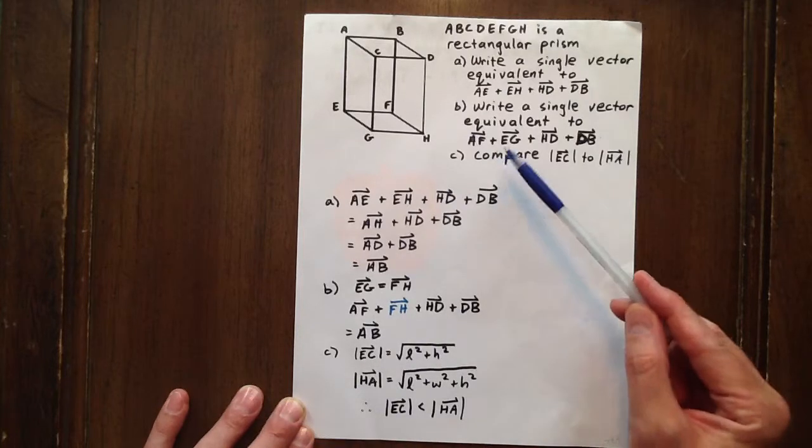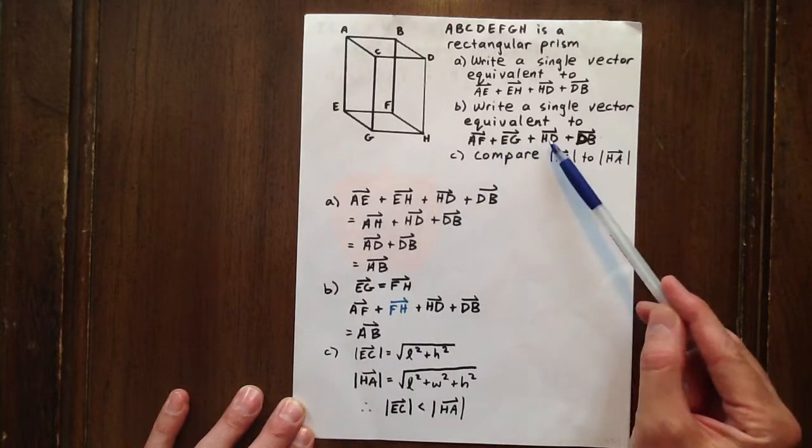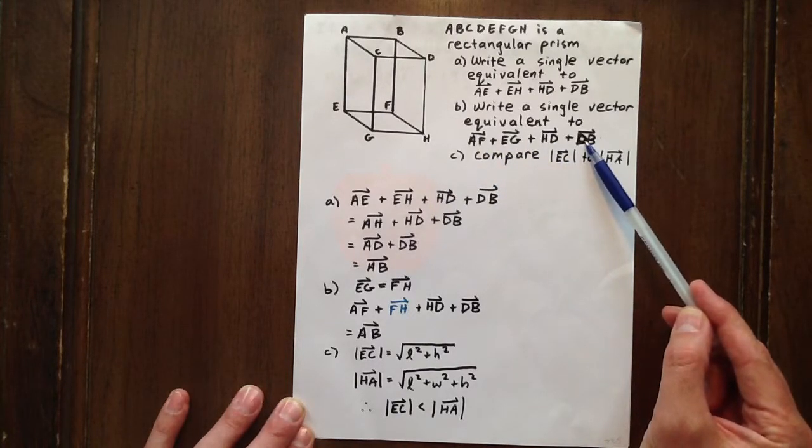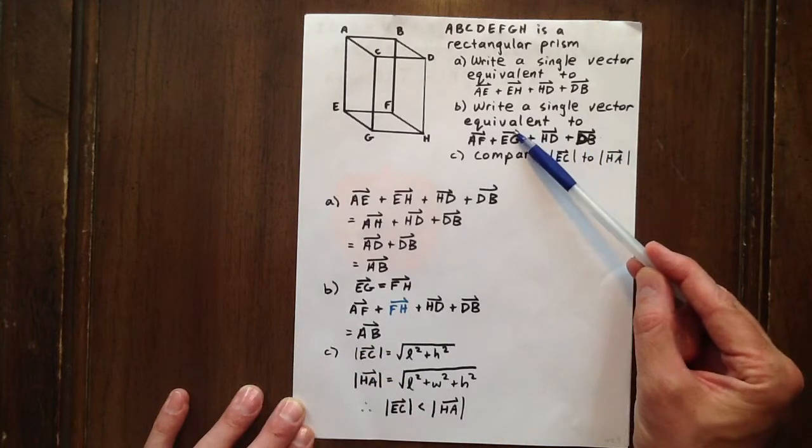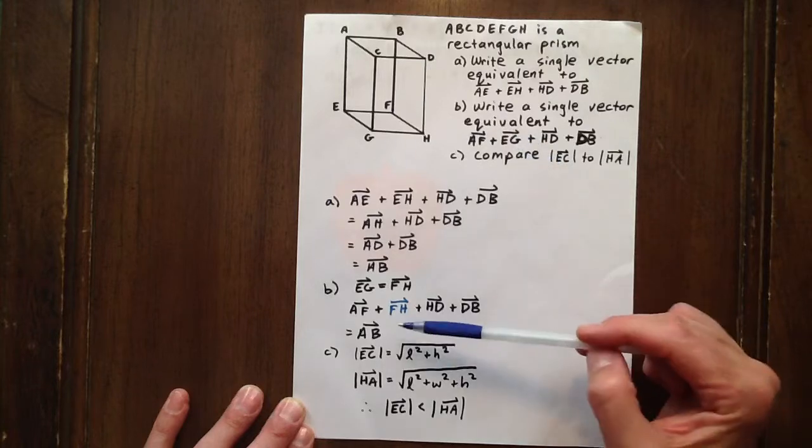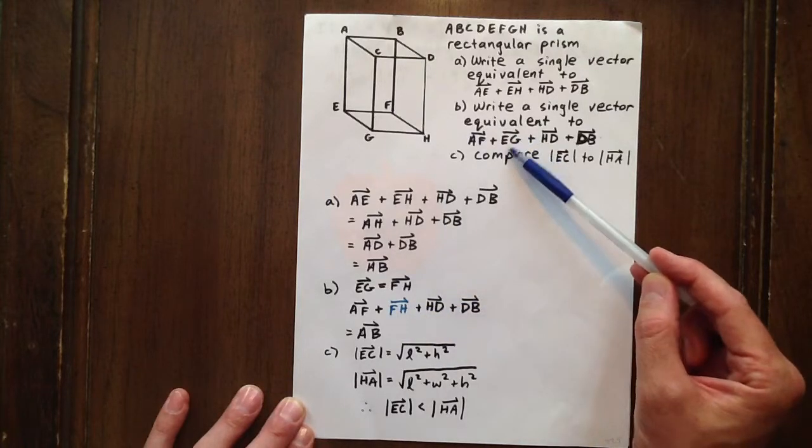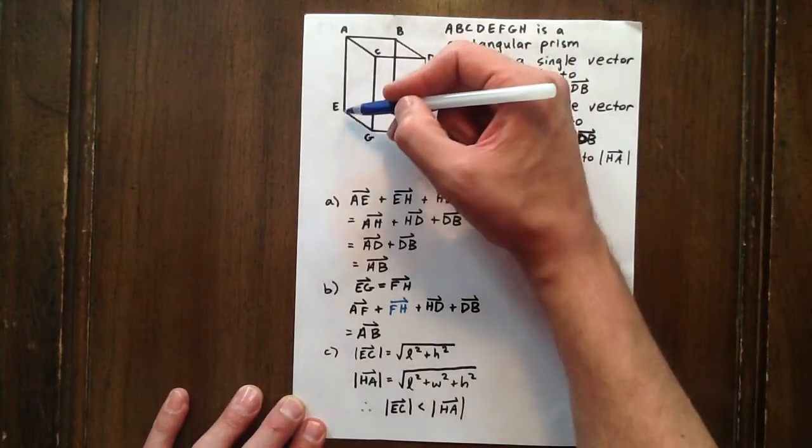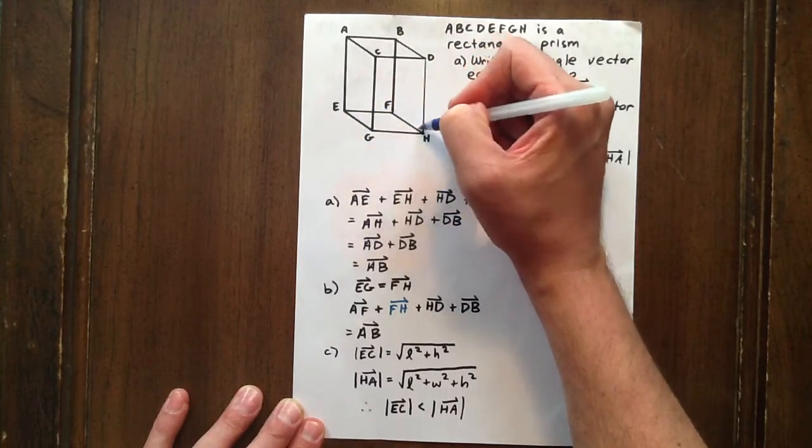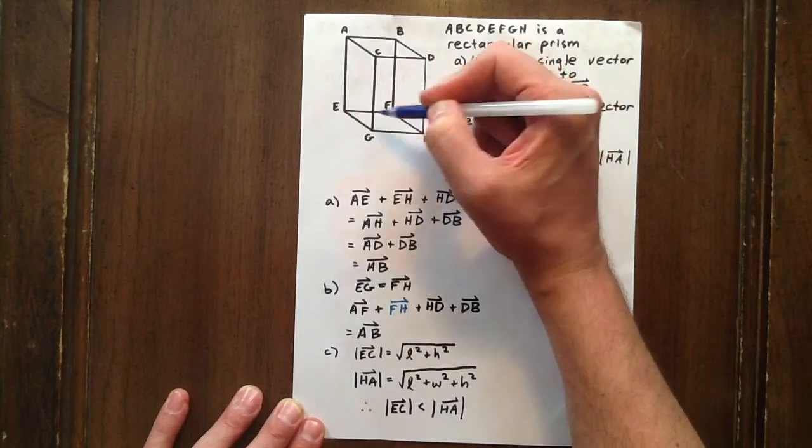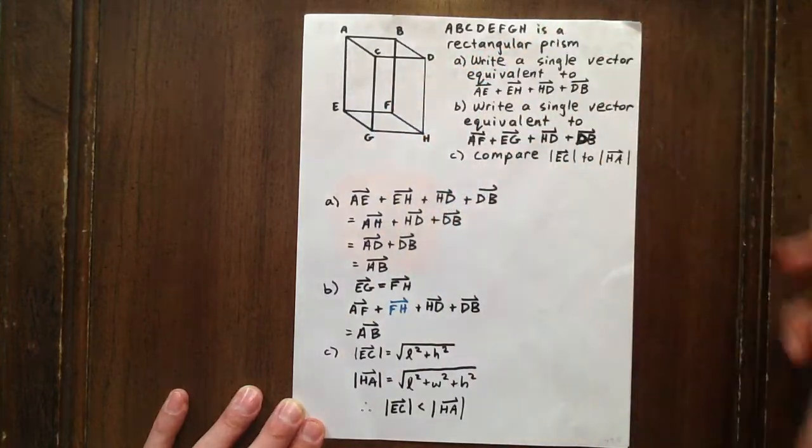For the next question we have AF plus EG plus HD plus DB. Well in that case what we can do is substitute FH for EG. The reason we can do that is because we have the same direction and the same magnitude in both cases.